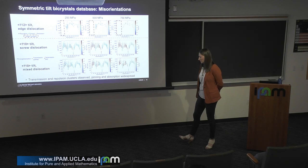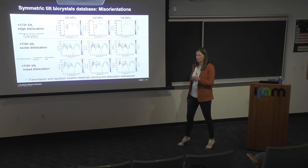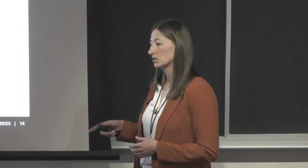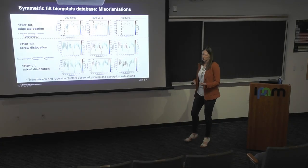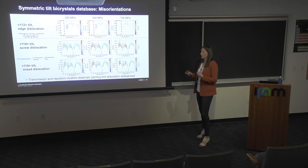Regarding whether this reaction map will evolve with sequential dislocations: yes, that's something we're thinking about but haven't fully dug into. When one dislocation moves through a grain boundary, it could change the local structure, so a subsequent dislocation in the same area might have a different reaction. How significant those changes are is uncertain, but we have some tools we can use to start doing that analysis.